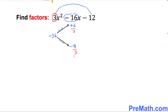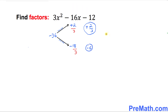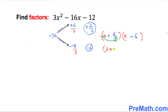Let's simplify. Positive 2 divided by 3 gives us positive 2 over 3, and negative 18 divided by 3 gives us negative 6. Finally, our factors: we put down two parentheses with x in each. The first number is positive 2 over 3 and the other is negative 6. We focus on the denominator 3 and drag it to the front of x, giving us 3x plus 2 times x minus 6.